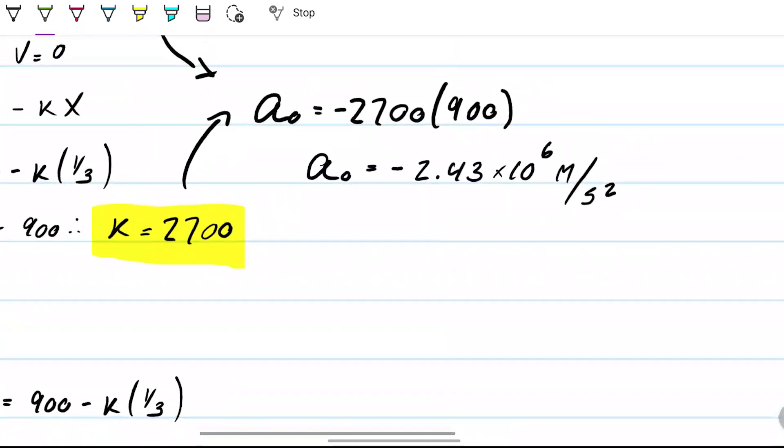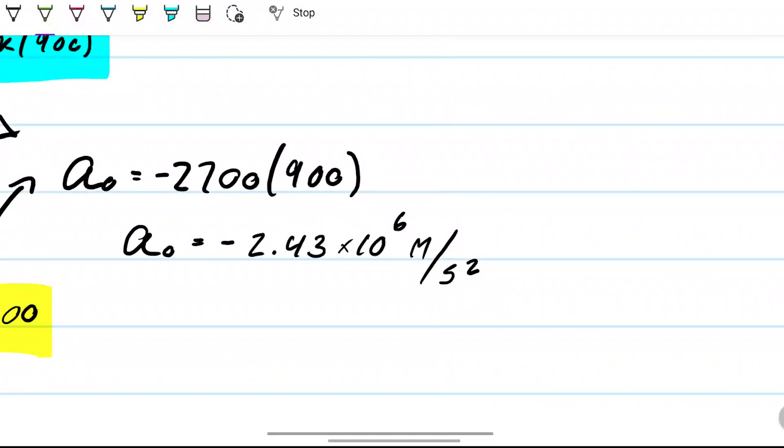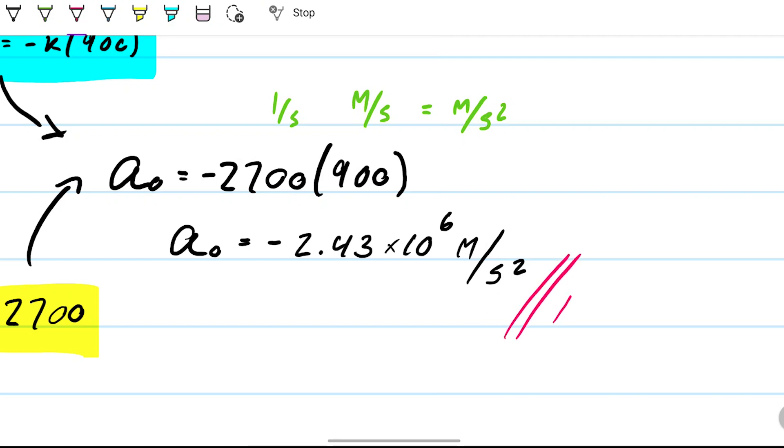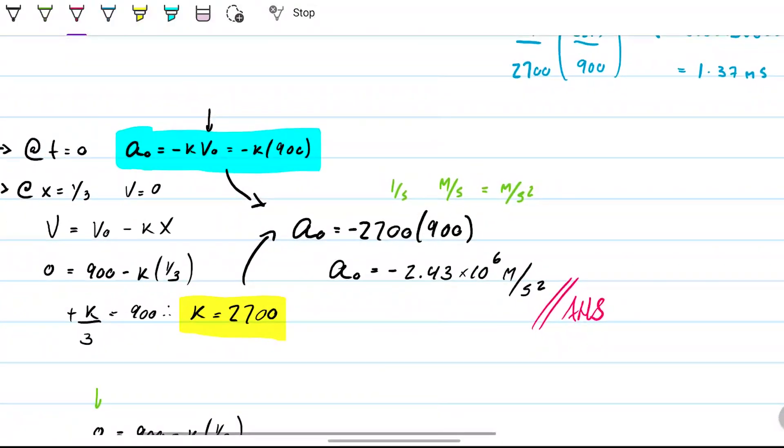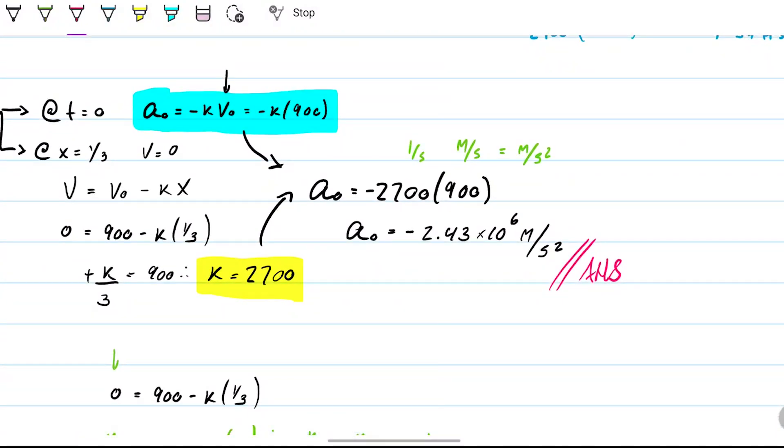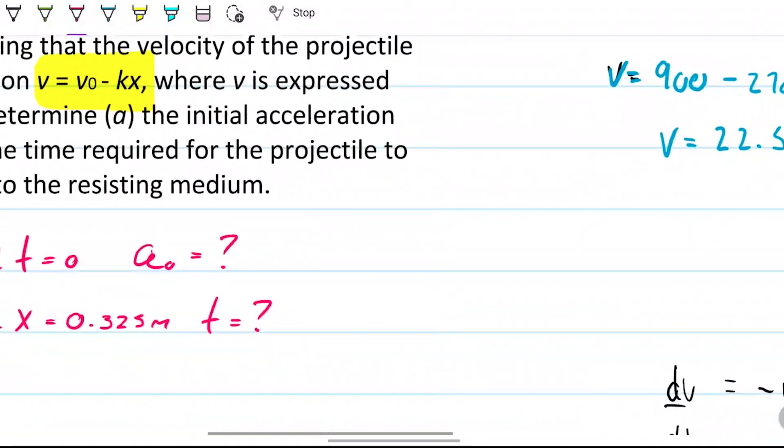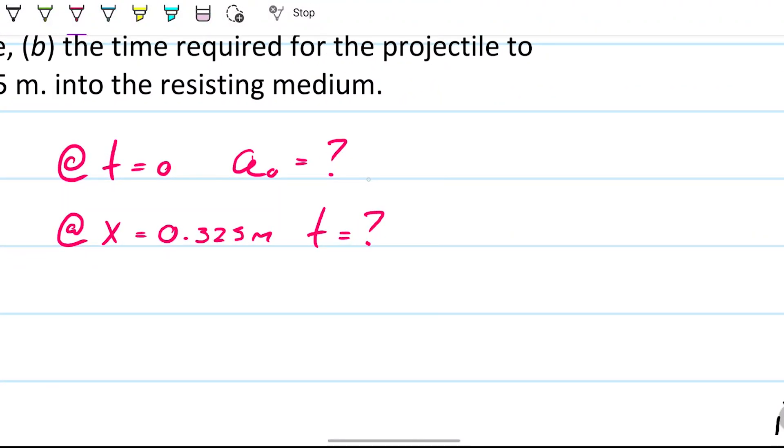If k equals one over seconds, when I come here what I'm doing is multiplying meters per second times one over seconds, so this is meters per second squared. That's how I know the unit. You could have guessed this, but it's always best to be sure and check it for yourself. That does it for the first part of the problem, which was asking: at time equals zero, what is acceleration? The acceleration equals -2.43 × 10^6 meters per second squared.